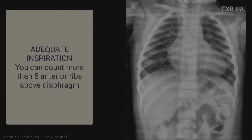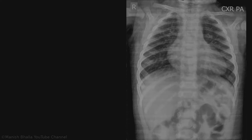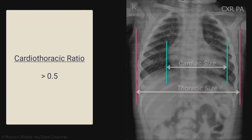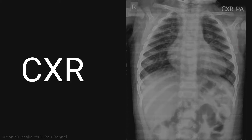This chest X-ray is taken in inspiration, slightly rotated to the left side, and is of adequate penetration. In this film, the heart is enlarged. If you observe carefully, you will note that the heart is boot-shaped. Boot-shaped heart, also known as coeur en sabot, is the description given to the appearance of the heart on plain chest X-ray film in some cases of Tetralogy of Fallot. It is the appearance of an upturned cardiac apex due to right ventricular hypertrophy and a concave pulmonary arterial segment, as you are seeing here.